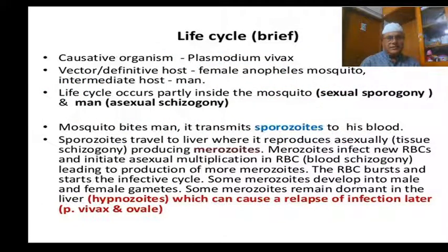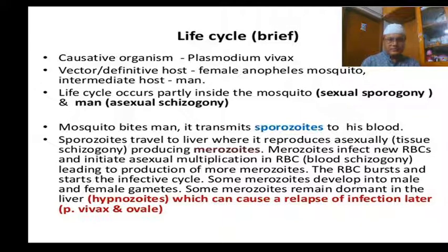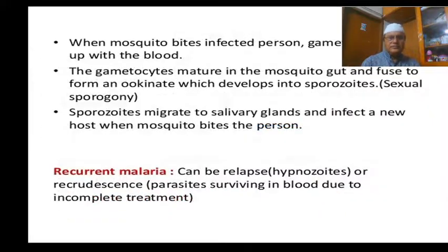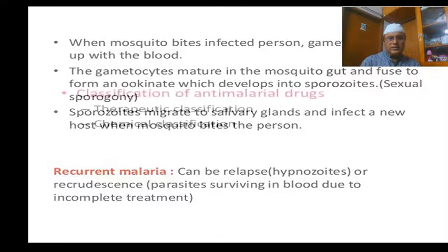The life cycle of malaria is shown in the figure. The causative agent is Plasmodium vivax; the life cycle is partly inside the mosquito — with a sexual life cycle in the mosquito — and partly in man, with an asexual life cycle. When an infected mosquito bites, it migrates sporozoites into the human being.